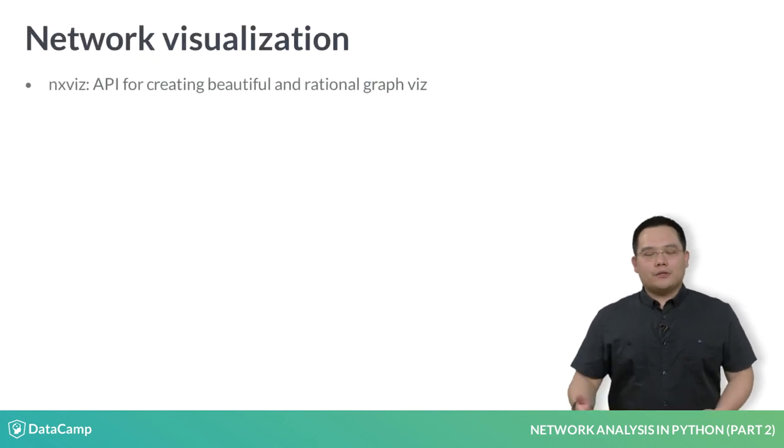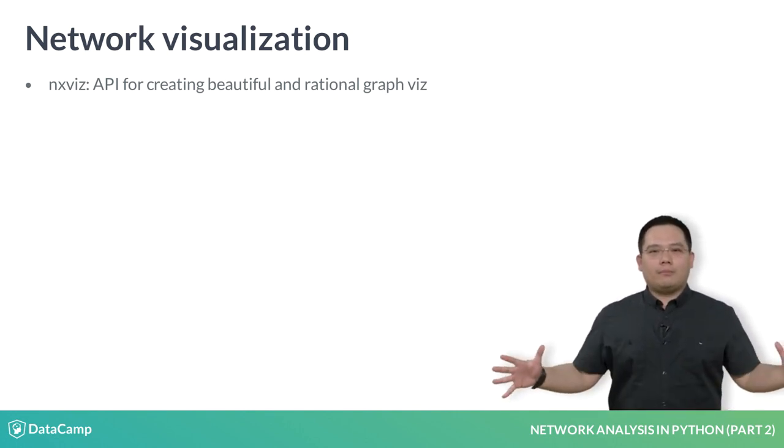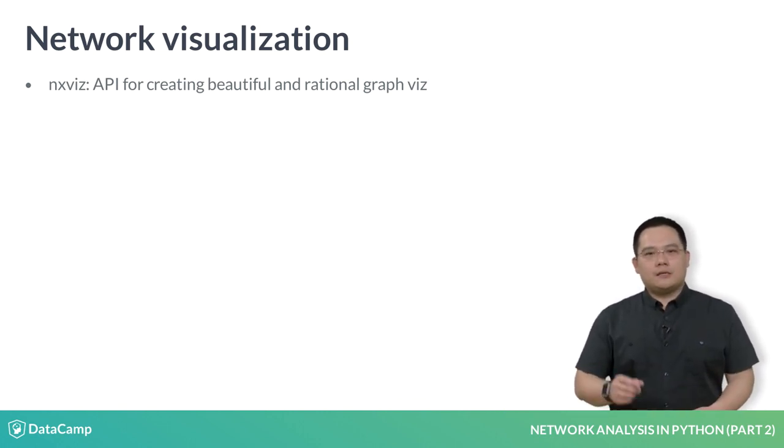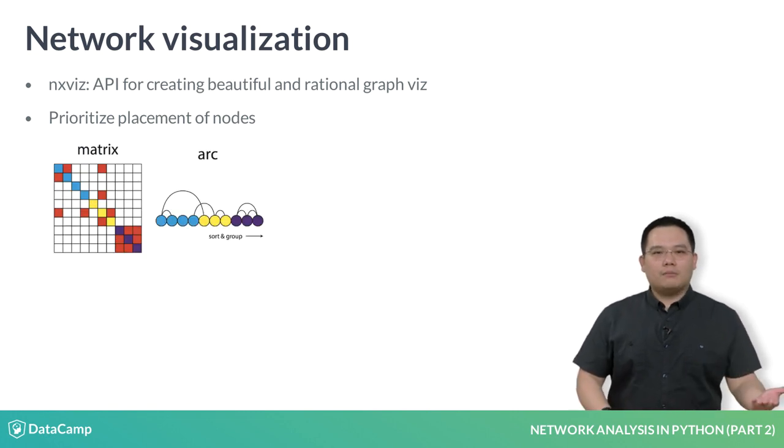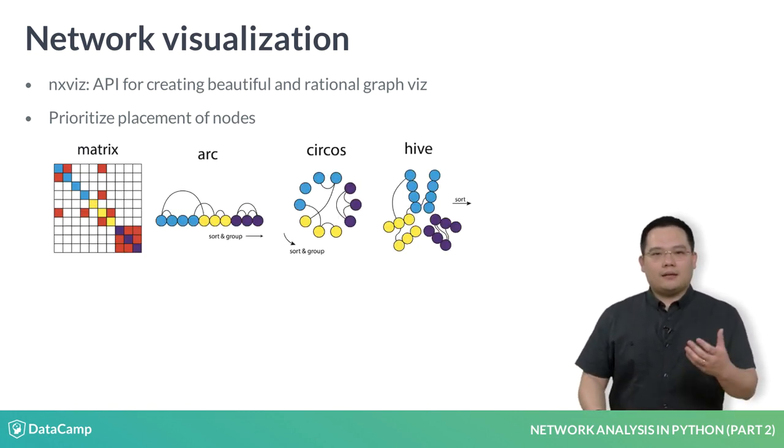Previously, you also learned about the nxviz package, which is a package I wrote that provides a simple API for the visualization of large, complex networks in a rational fashion. Rational visualizations prioritize the node's placement. This allows us to create beautiful visualizations such as the matrix plot, the arc plot, the circos plot, and the hive plot.